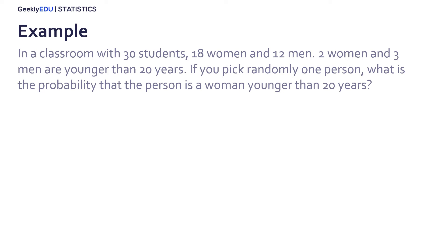In this second example, we are going to use the general rule. In a classroom with 30 students, 18 are women and 12 men. 2 women are younger than 20 and 3 men are younger than 20 years. If you pick a person, what is the probability that the person you picked is a woman younger than 20 years old?